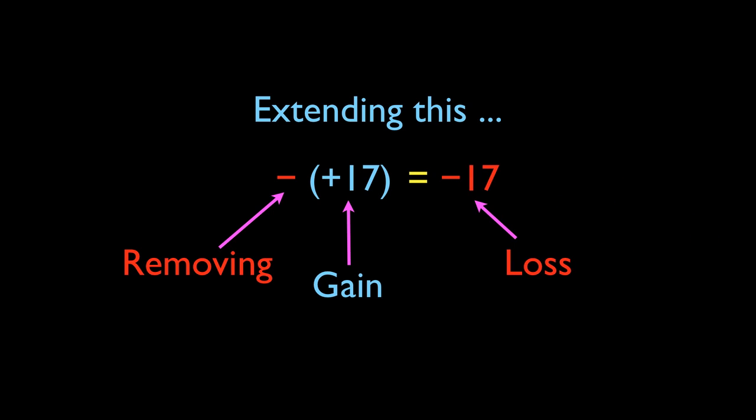Now consider what happens when we try to subtract positive 17. The subtraction I want you to regard as removing, and the positive 17 we've already said is a gain. So if we remove a gain of positive 17, I think most of you would agree that removing any kind of gain is equivalent to a loss. So we would condense that to be just negative 17. So subtracting a positive 17 is equivalent to just negative 17, and we would regard it as a loss. So now you're ready to examine what happens when we try to subtract a negative number.